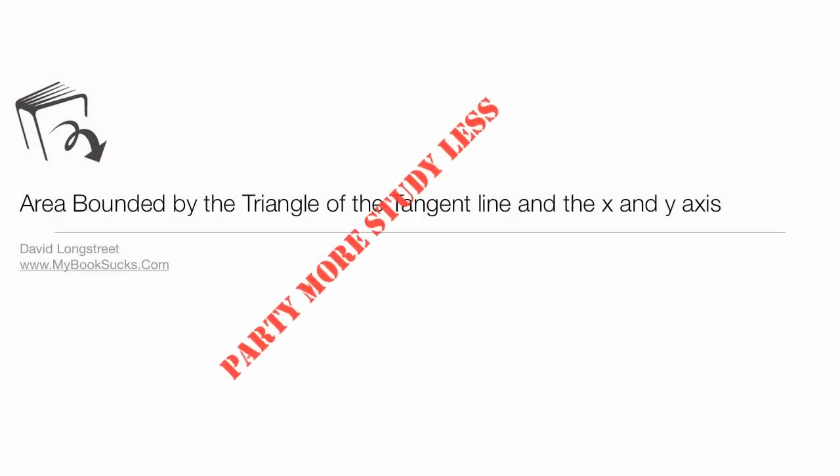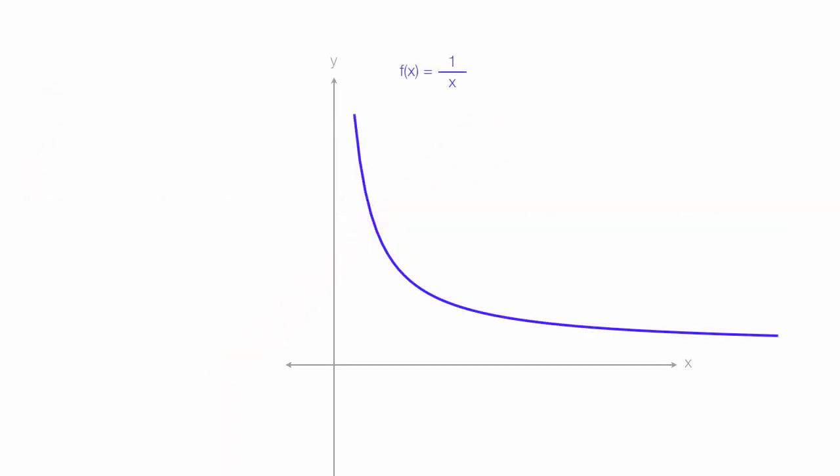In this tutorial, I'm going to discuss how to calculate the area of a triangle that is bounded by a tangent line to the function 1 over x and the x and y axis, the brown triangle. The interesting thing is the area is always equal to 2 regardless of where the tangent line is located.